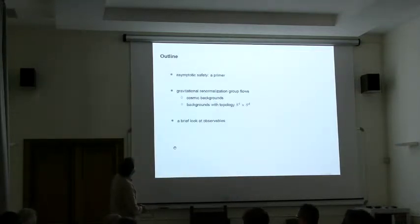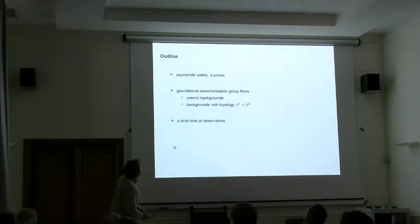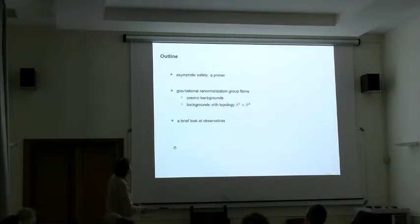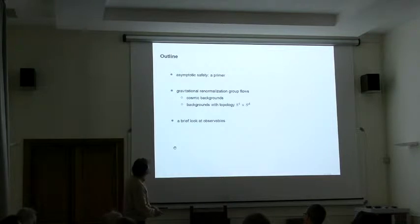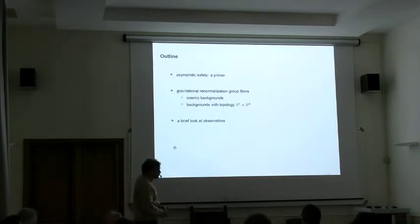Let me spend a few words explaining what we mean by asymptotic safety. Then, there will be a picture show showing gravitational renormalization group flows on various backgrounds. We worked on cosmic backgrounds and we worked on compact backgrounds. In the end, I will hopefully explain how this fits together in various approaches.